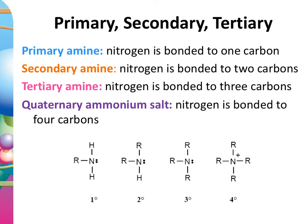Just as we've done before with alcohols — where we paid attention to whether they could be classed as primary, secondary, or tertiary — we can do the same with amines. With alcohols we talked about how many carbons were attached to the carbon that the hydroxyl group was attached to. Here we're talking about how many alkyl groups are attached to the nitrogen. With a primary amine, one hydrogen has been replaced by an alkyl or aromatic group. Secondary has two carbons bonded to the nitrogen, tertiary has three. And then there's a fourth thing called a quaternary ammonium salt.